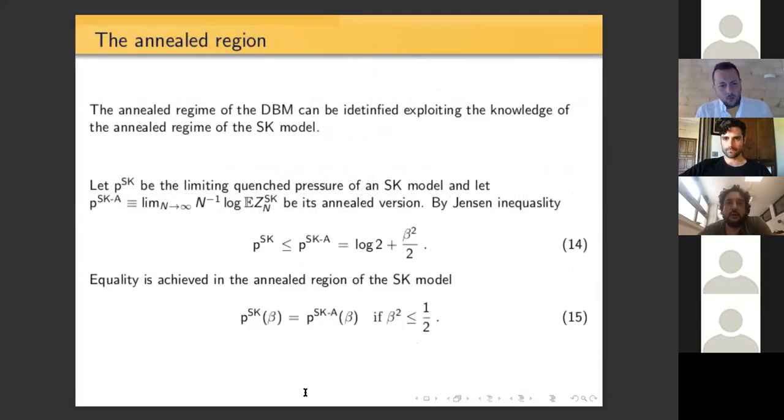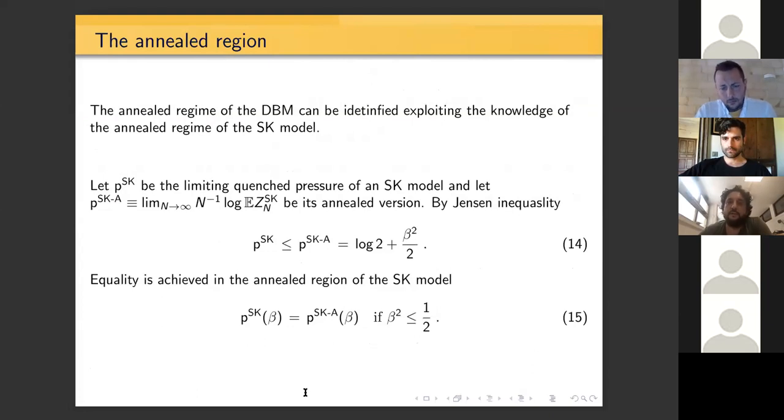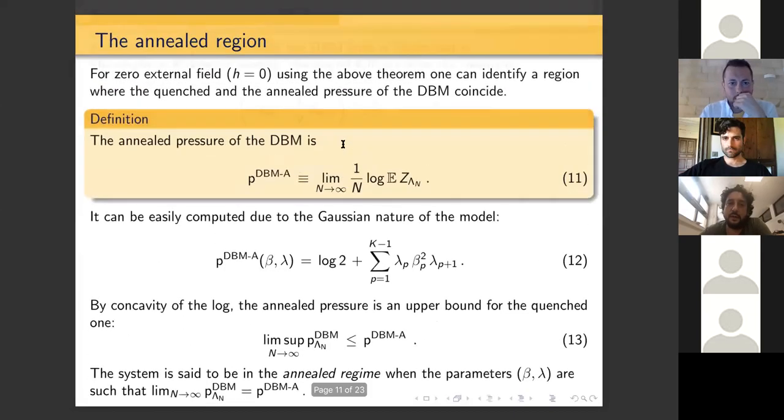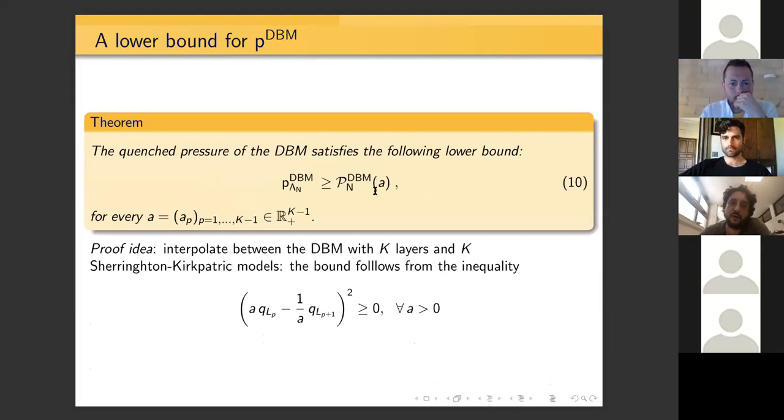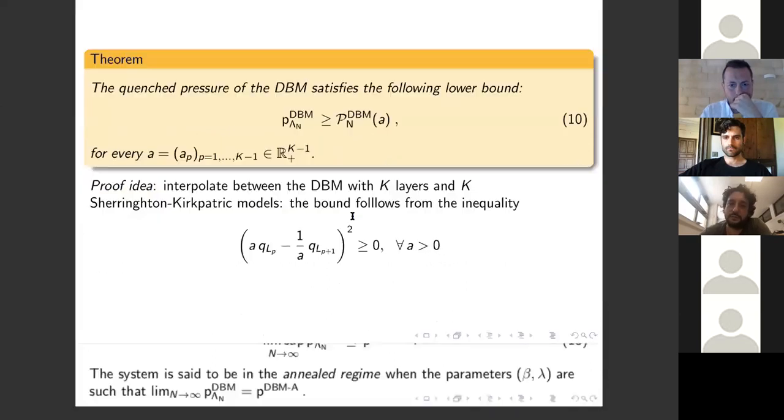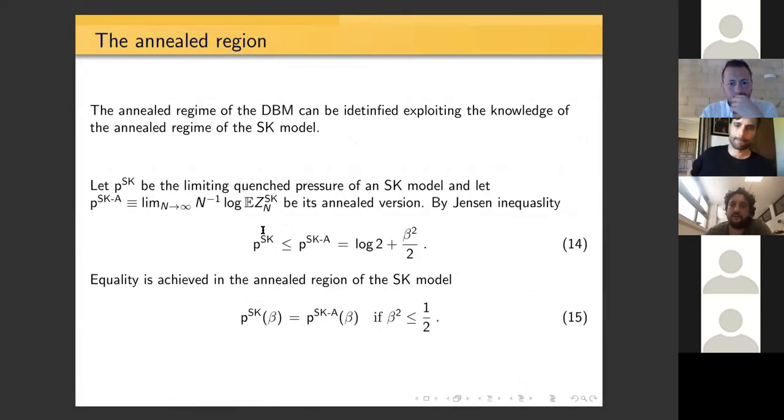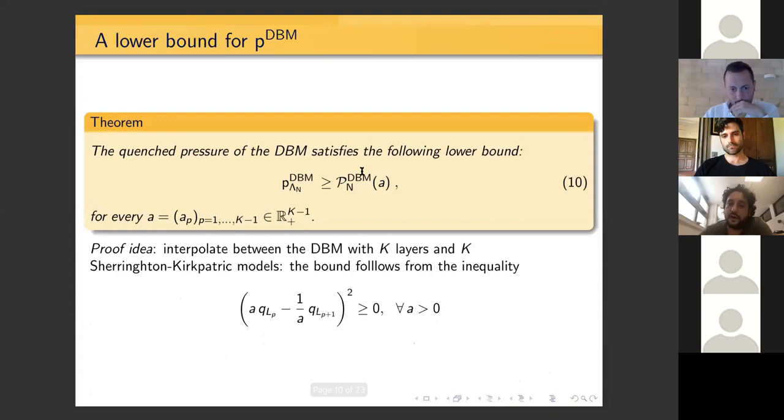As I mentioned, we have to exploit the control of the annealed region of the SK model, because if you remember, here on the right-hand side of this inequality, there is a sum, a convex sum, of SK models. Just to remember what happened for the SK model, there is this result, which I guess is the first rigorous result on the SK model, due to Aizenman and Lebowitz, which is: the quenched pressure of the SK model equals the annealed one for β small enough, so for high-temperature regime. This is the result for the SK model.